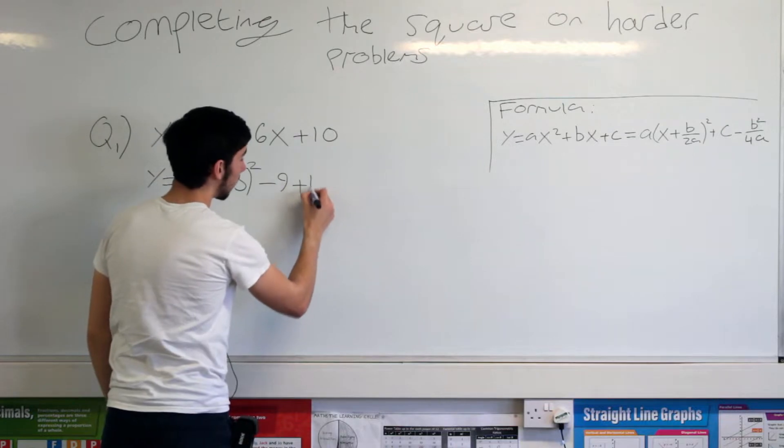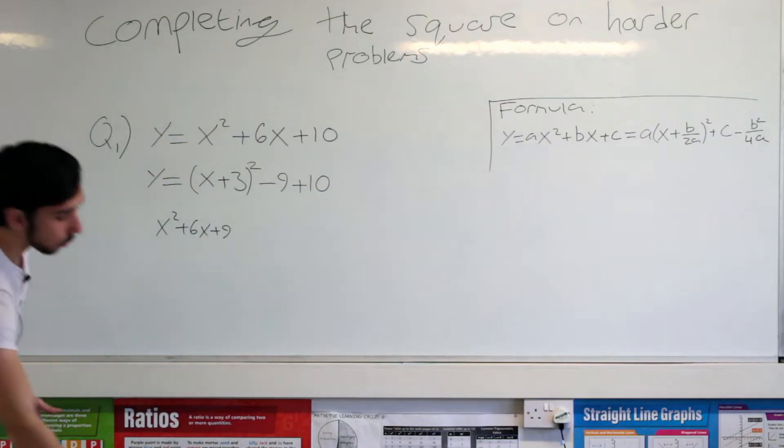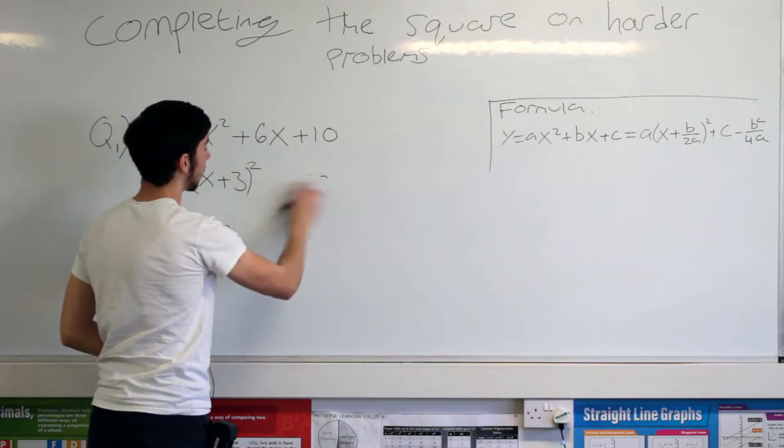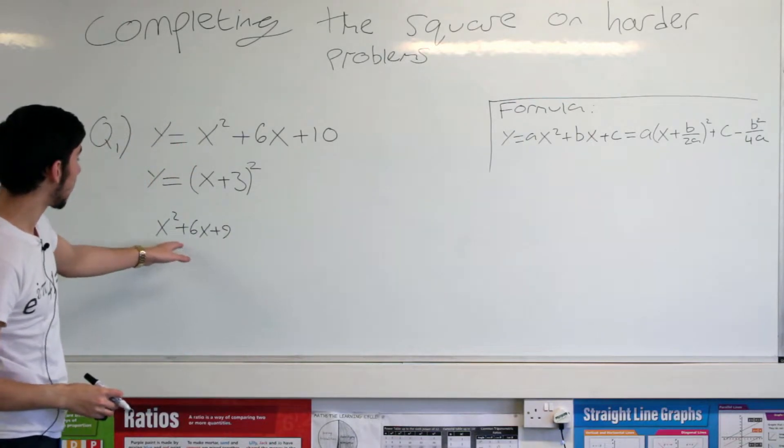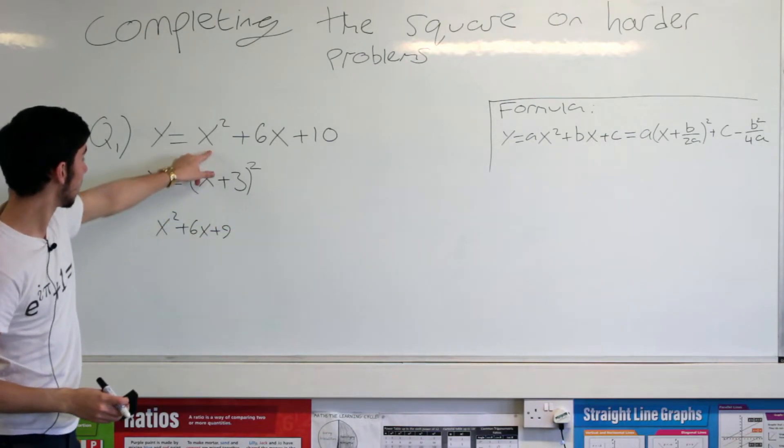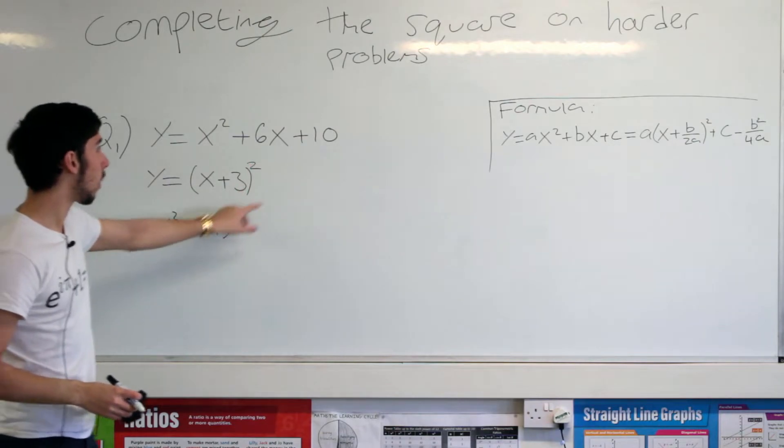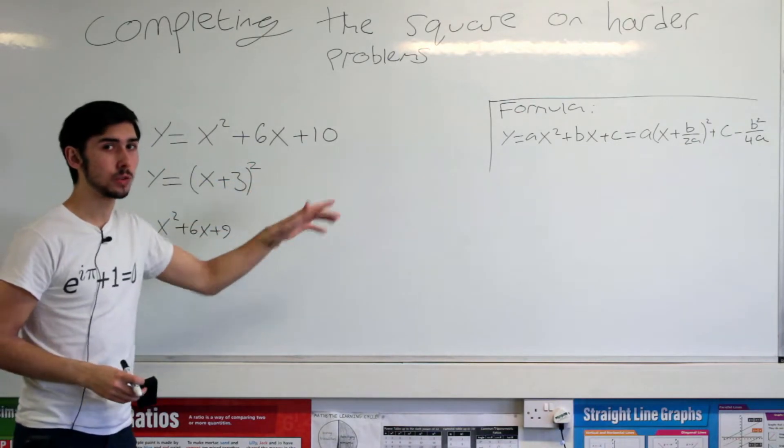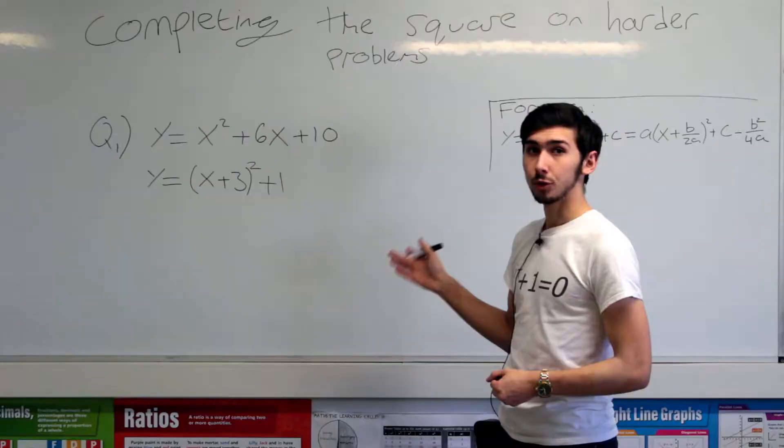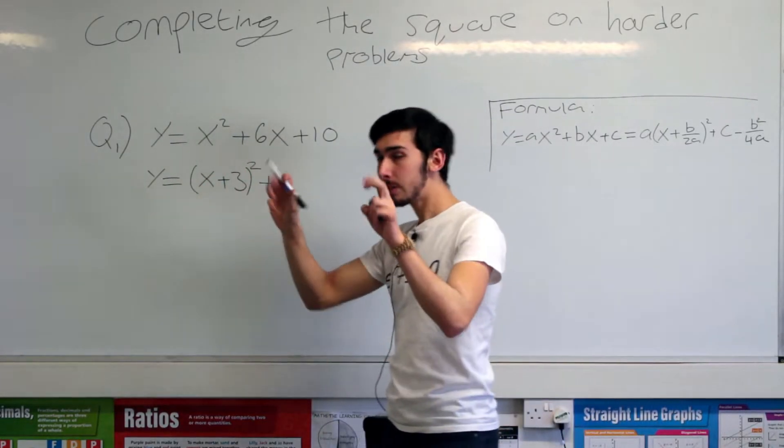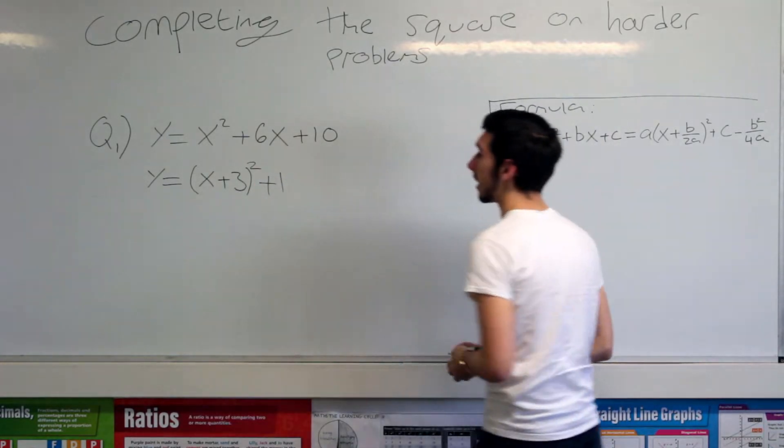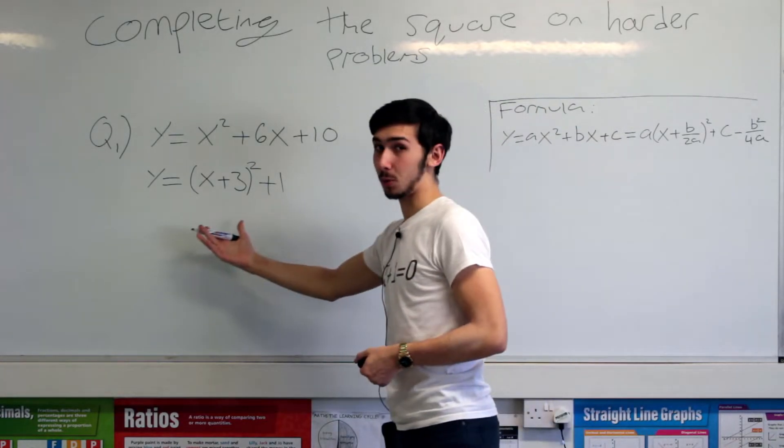But we haven't dealt with this 10. So we're going to add a 10 on. In other words, what is that? Minus 9 plus 10, that's positive 1, right? So in other words, this is another thing that you can do. You can say, I have got, by getting this, I have got the x squared, the 6x and 9, but I want 10. I have 9, I want 10. I'm going to add 1. That's totally valid too. So the completed the square version of y equals x squared plus 6x plus 10 is this. This is the completed the square version. We've completed the square on this question.